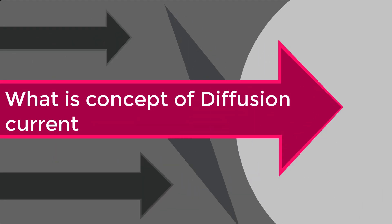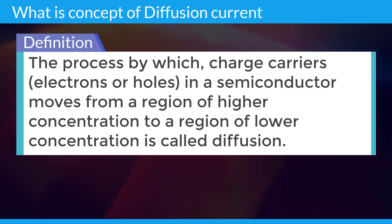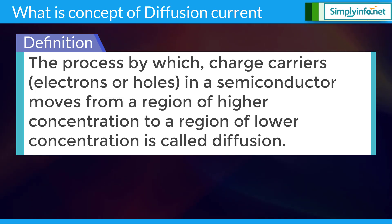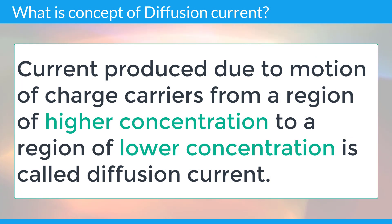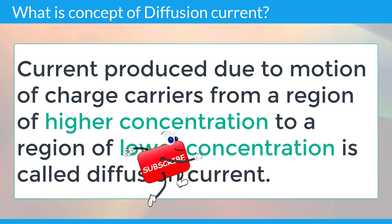Diffusion Current: What is the concept of diffusion current? The process by which charge carriers, i.e. electrons or holes in a semiconductor, moves from a region of higher concentration to a region of lower concentration is called diffusion. Current produced due to this motion of charge carriers from higher to lower concentration is called diffusion current.